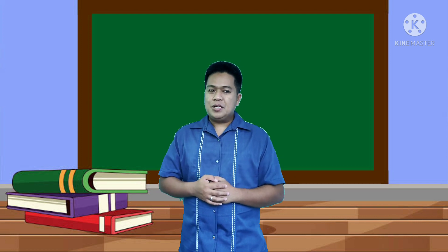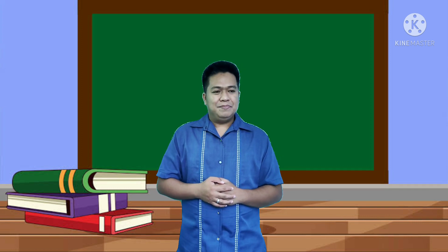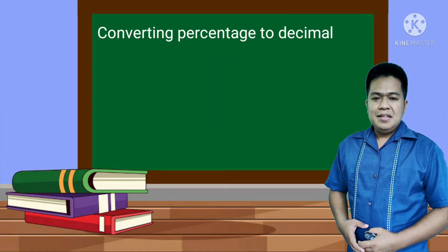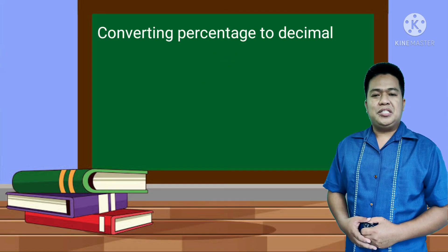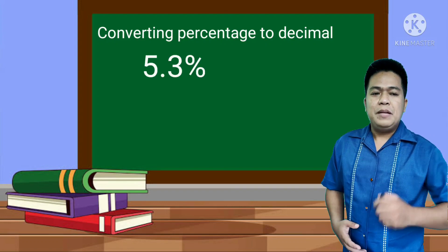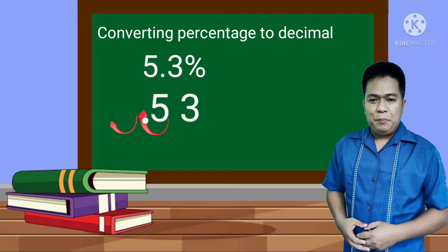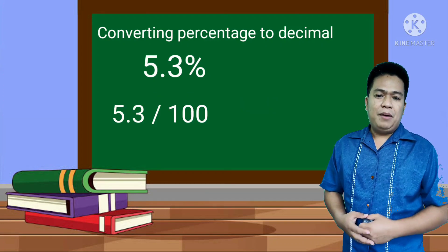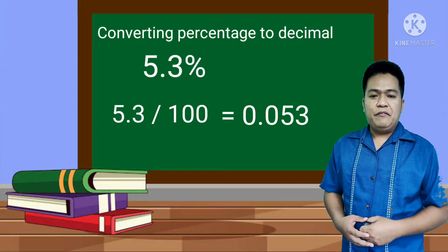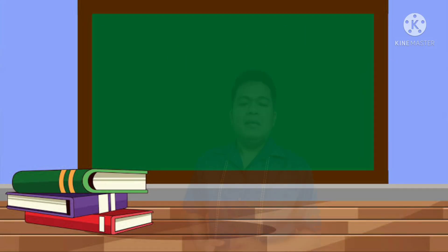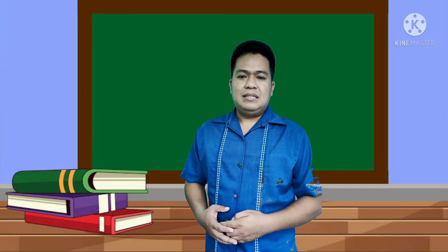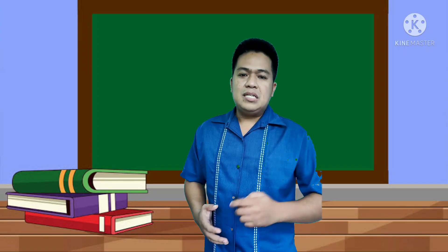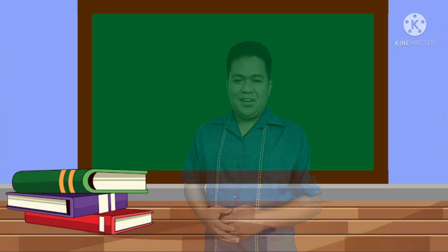But how do we convert percentage to decimal again? The easy way to convert percentage to decimal is simply done by moving the decimal point two places to the left, or simply by dividing it by 100, then remove the percent sign. Please do not forget the concept of converting percentage to decimal because we will apply that in our new lesson.